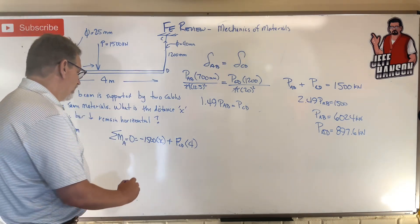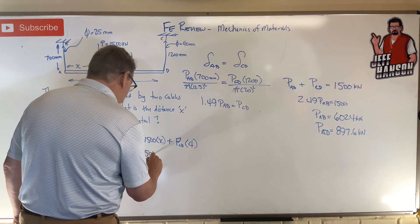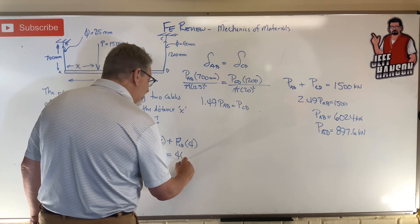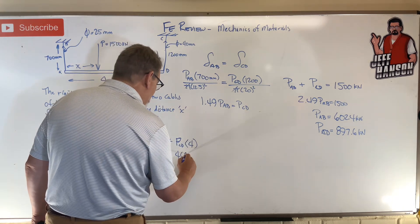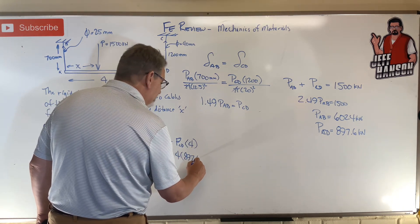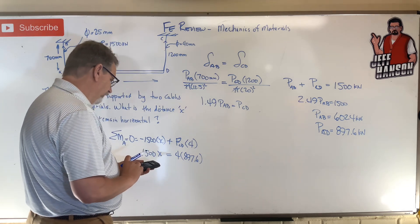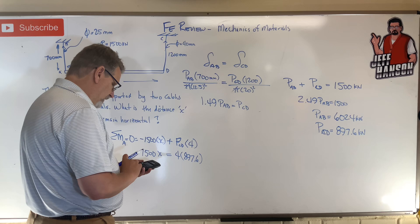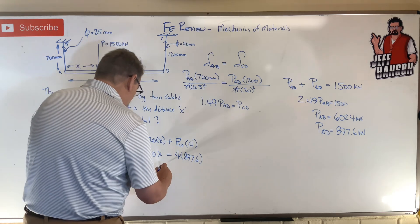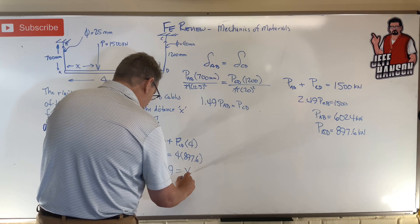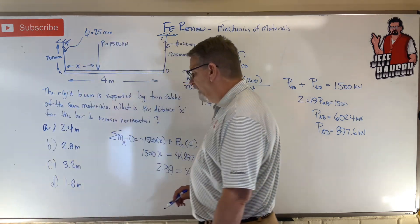Oh hang on a second, all I gotta do is put it in here. So 1500X is equal to 4 times P_CD, 897.6. Times 4, and then divided by 1500 equals 2.39 equals X.